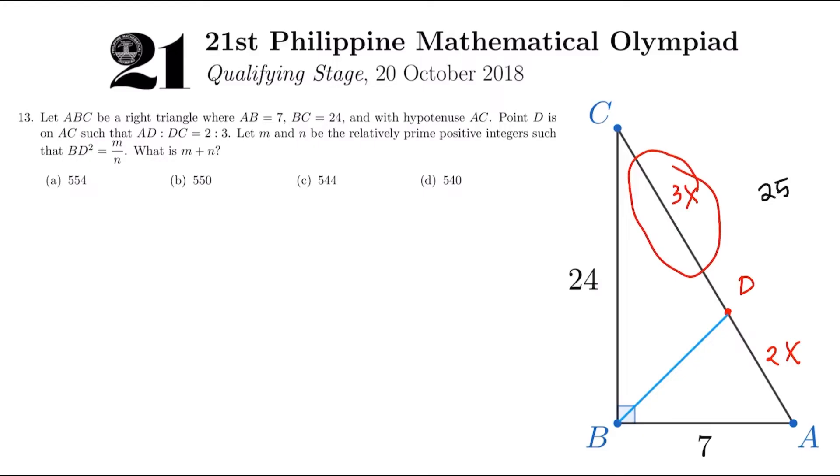Then what we need to find is BD squared. Now, we have two missing lengths here, CD and AD. Now, 2 is to 3. So let's just represent it as 2X and 3X just to represent the ratio. And then we could just do some algebra. So 3X plus 2X, when you add it, it's 25. So 5X equals 25. We're going to get X is equal to 5. So 3X is 15, 2X is 10. And here is a nice setup.